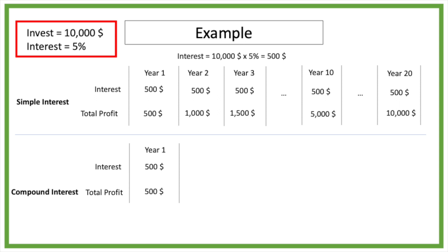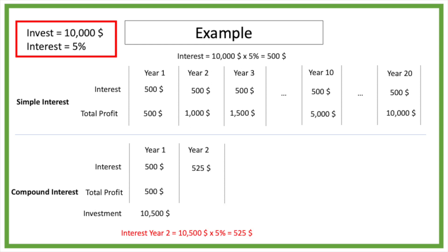If we reinvest the 500 dollar, our investment increases to 10,500 dollar. In the second year we would still get 5 percent interest, but this time 5 percent will be paid on the 10,500 dollar investment instead of the 10,000 dollar. So 5 percent of 10,500 dollar is 525 dollar interest after year 2.